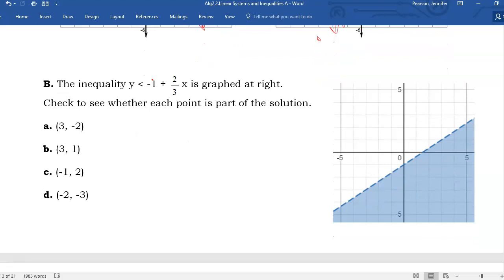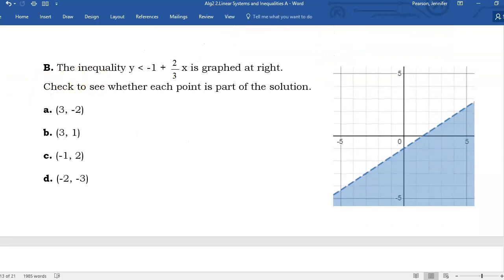Letter b, the inequality y is less than negative 1 plus 2 thirds x is graphed at right. Check to see whether each point is part of the solution.